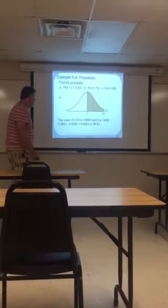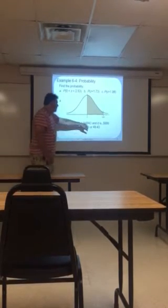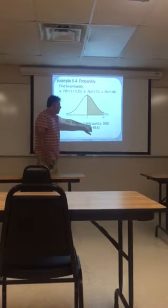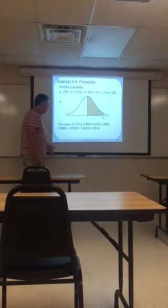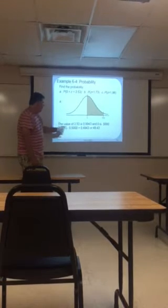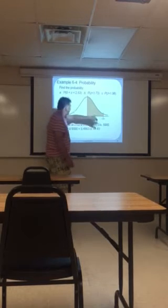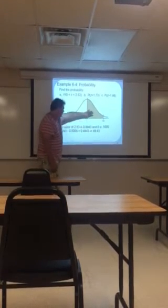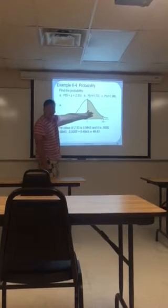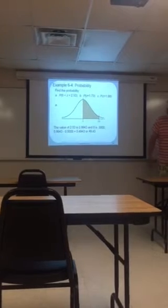Looking at those scores in the back of the book. The value of 2.53 basically is 99.43 and of course zero is 50%. So you can just take that 50% off of 99.43 and find out what the area is here, the area is here, and the area is here. So this is 50% and this looks like it's going to be 49.43%. So that's kind of where you're finding all these percentages.